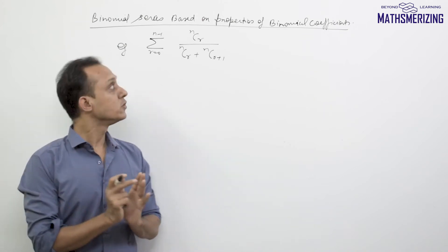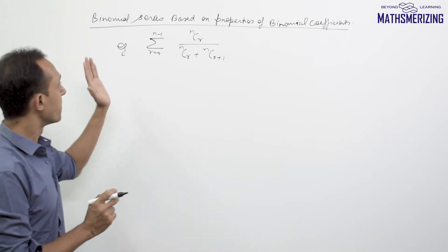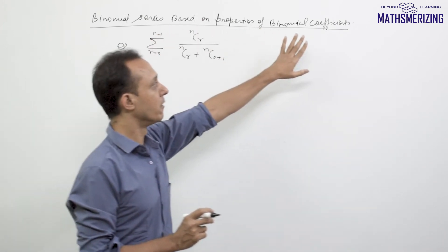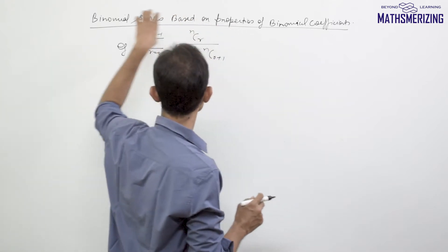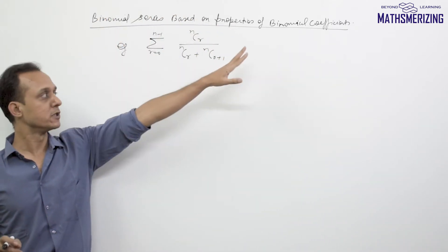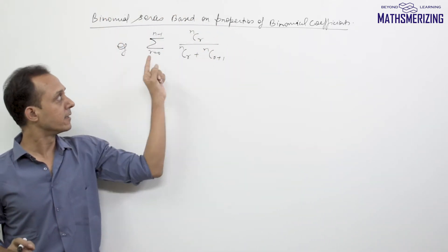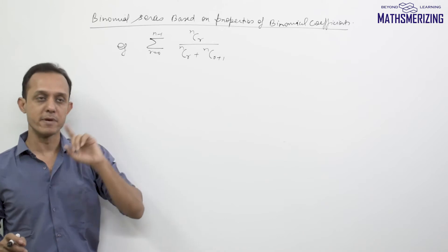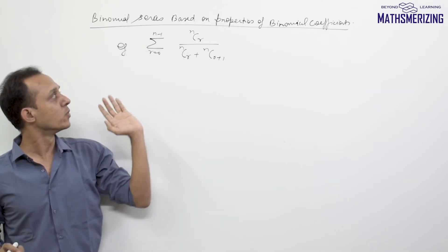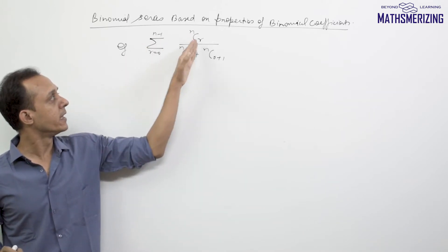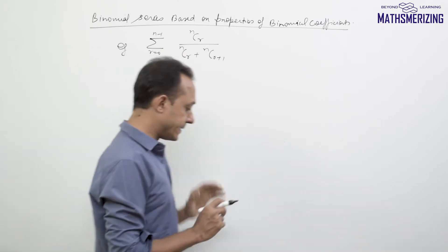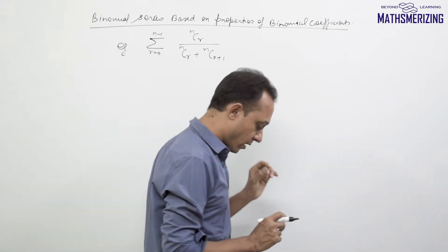Now there will be some questions based on properties of binomial coefficients. We will take up some series where we will need to use binomial coefficient properties. For example, the question is: summation r varies from 0 to n-1 of nCr divided by (nCr plus nCr+1).